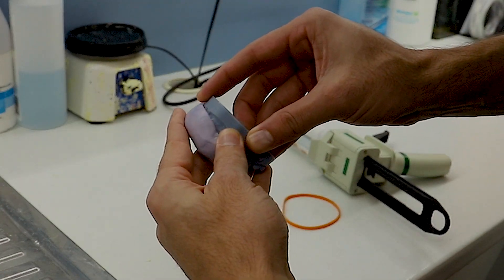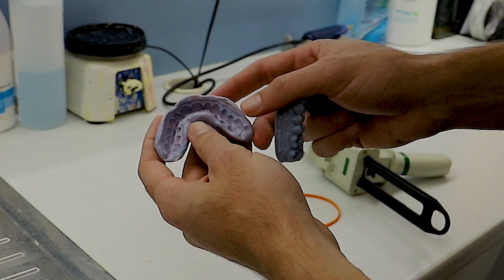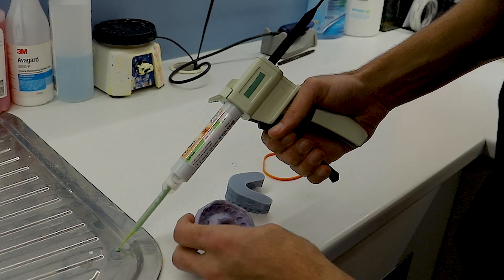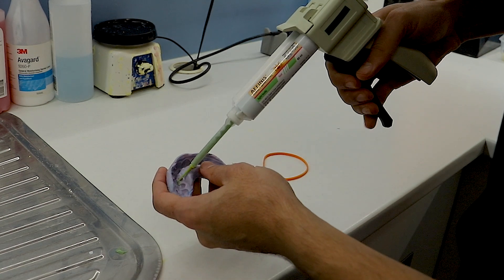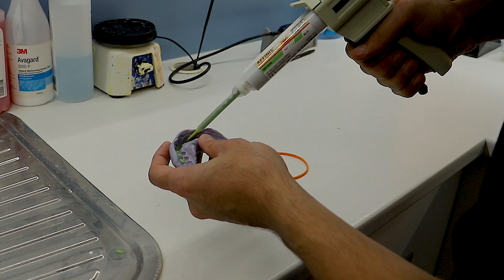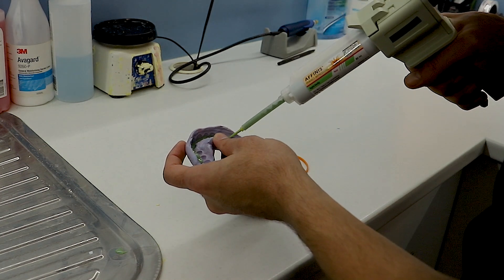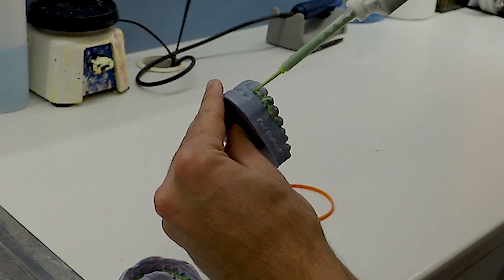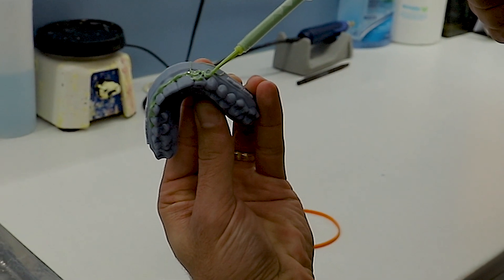Now that this is set we just want to improve the accuracy a little bit. This is quite accurate but we're going to make it a little bit more accurate by doing a light body wash. We're going to bleed some material first and put some in the teeth that are having the additions done to them. You don't need a huge amount and then a little bit around the margins to make sure that they're really defined. That's on the model.